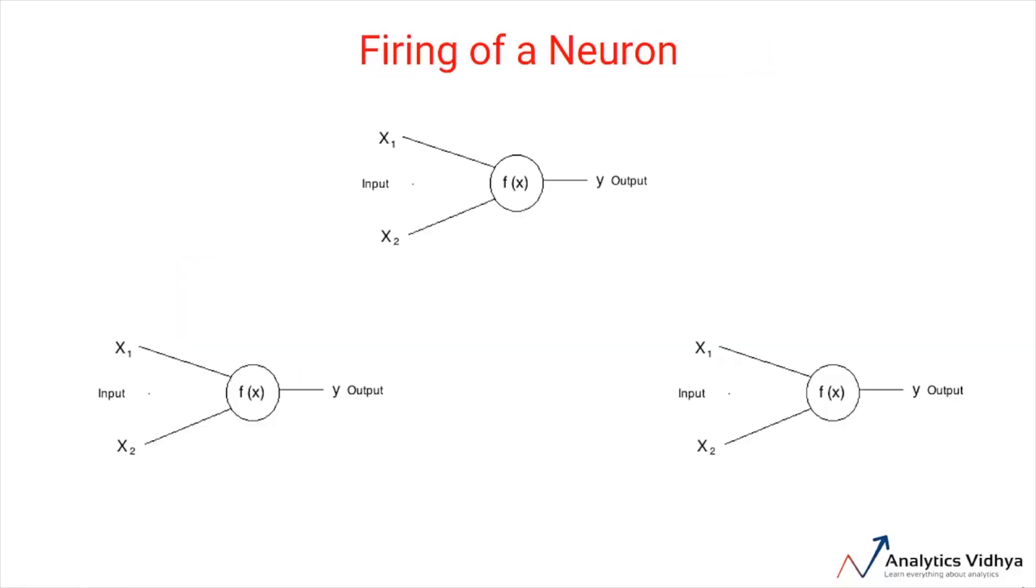Now in real life, we all have heard the phrase fire up those neurons in one or the other form. So, does that apply to artificial neurons as well? Actually, yes. Every neuron has a tendency to fire but only in certain conditions.